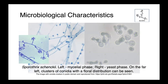Here we have Sporothrix schenckii. On the left, we have the organism in its mycelial phase — you can see hyphae and the spores. In this far-right image from the U.S. Centers for Disease Control, you can see the arrangement of those conidia into these little florets, which is really the classical appearance. And then on the right, we have the yeast form grown at elevated temperatures.